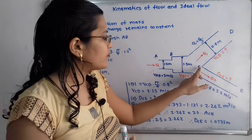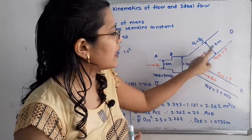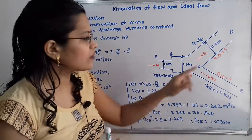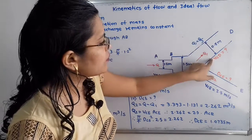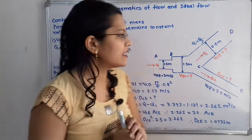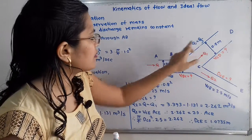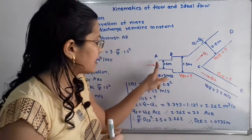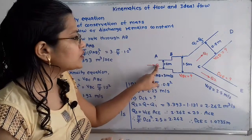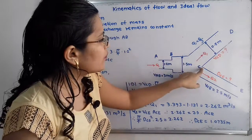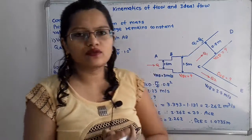For branch CD, the diameter is given as 0.8 meter and we have to calculate the velocity in CD. It is also given that the rate of flow through CD is one third of the initial rate of flow at section AB. So if the rate of flow is Q, the rate of flow in CD is Q1, then Q1 equals Q divided by 3.